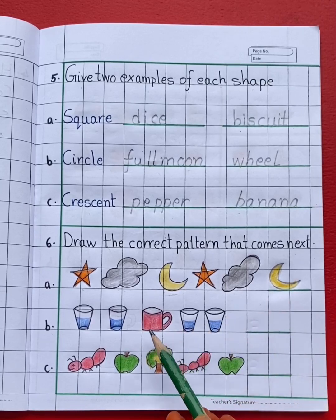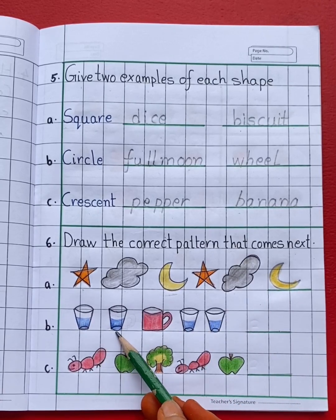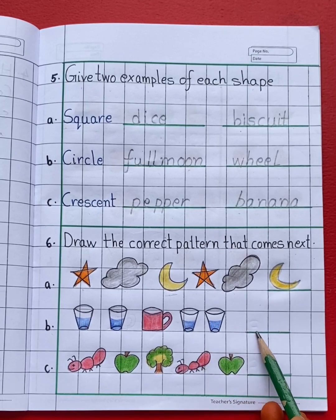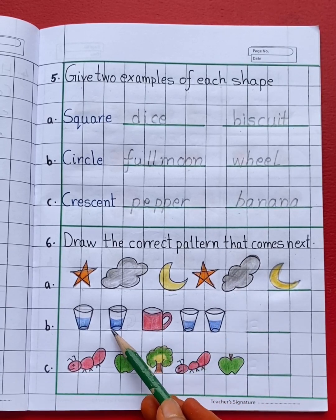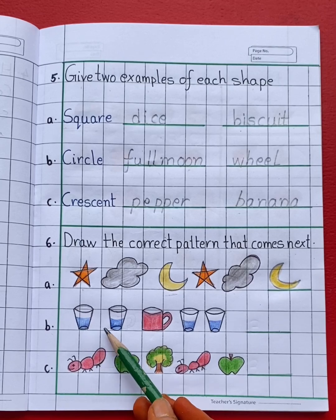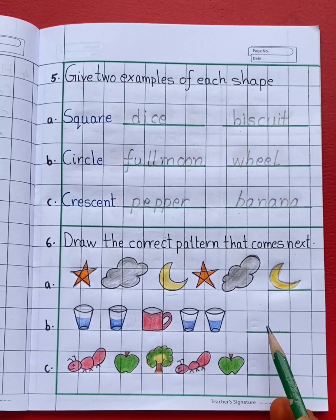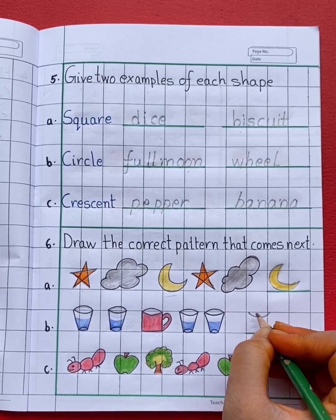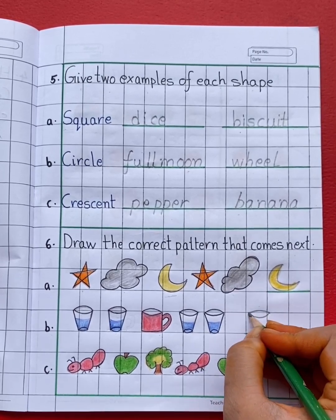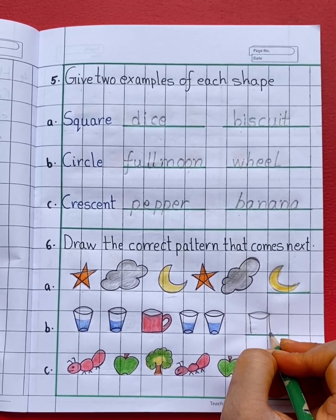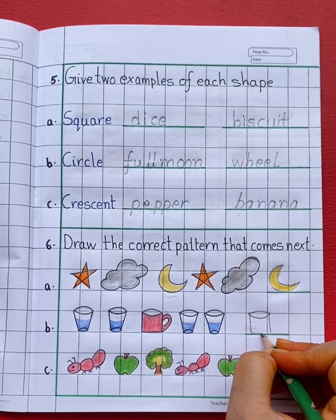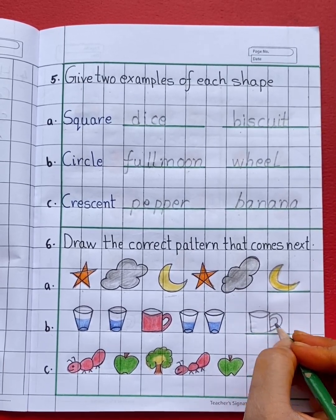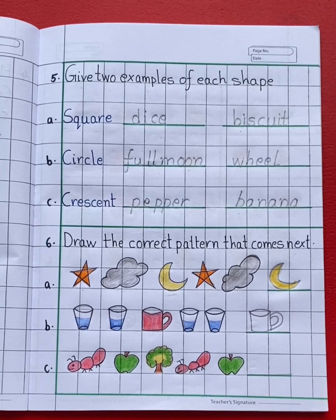Now see the next pattern. Glass, Glass, Mug. Glass, Glass. What comes next? See the pattern — Glass, Glass, Mug. Mug comes next. So draw here Mug. What is the color of the Mug? Red.